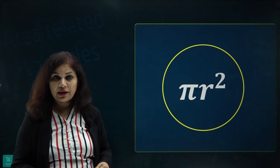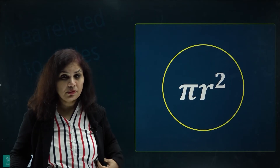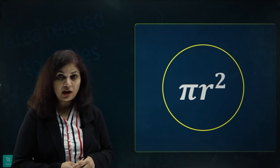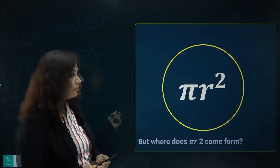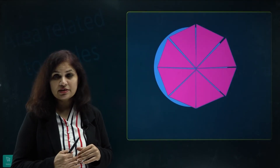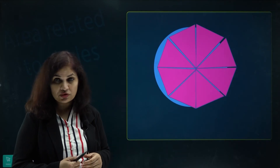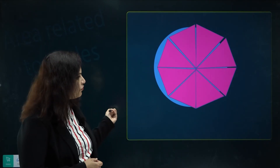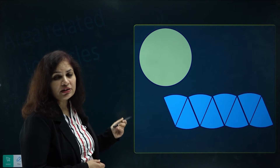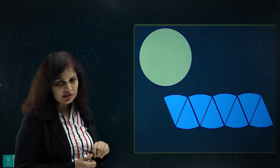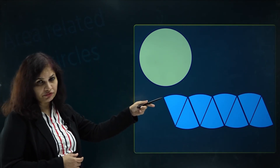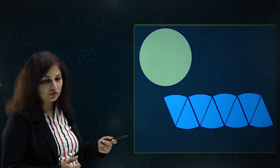Now, what is πr²? We must have heard that it is the area of a circle, but how do we get this formula? Suppose we have a circle and we divide it into very small sectors. Here I have divided this circle into four sectors. I cut the four sectors and arrange them in the form of a rectangle. When I arrange them, I see it is not exactly a rectangle — it resembles a parallelogram with a curved side on top.